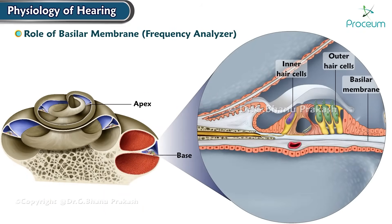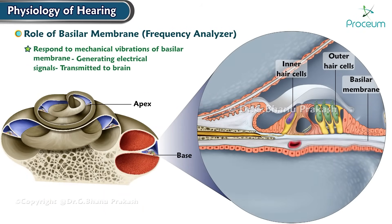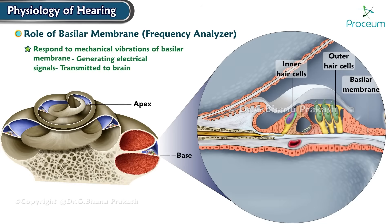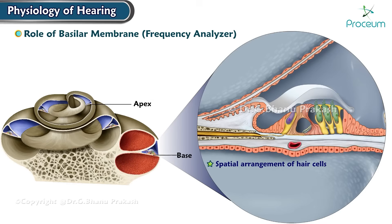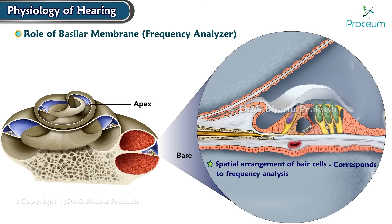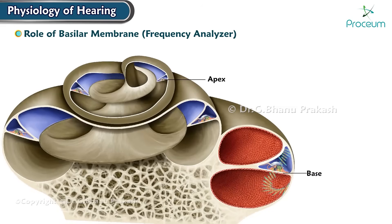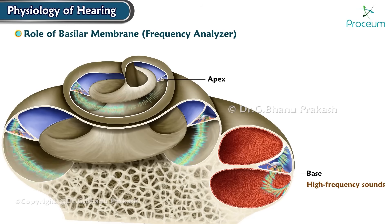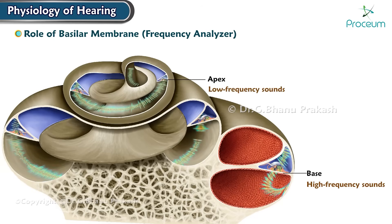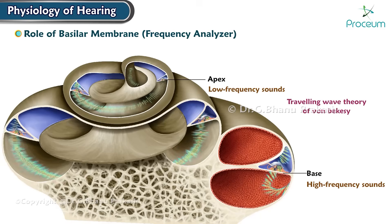The hair cells of the organ of Corti are located on the basilar membrane and respond to its mechanical vibrations by generating electrical signals transmitted to the brain. The spatial arrangement of hair cells corresponds to frequency analysis: hair cells at the base respond to high-frequency sounds, and those at the apex respond to low-frequency sounds. This gives the appearance of a traveling wave in the basilar membrane, a concept described by the Traveling Wave Theory of Von Bekesy.